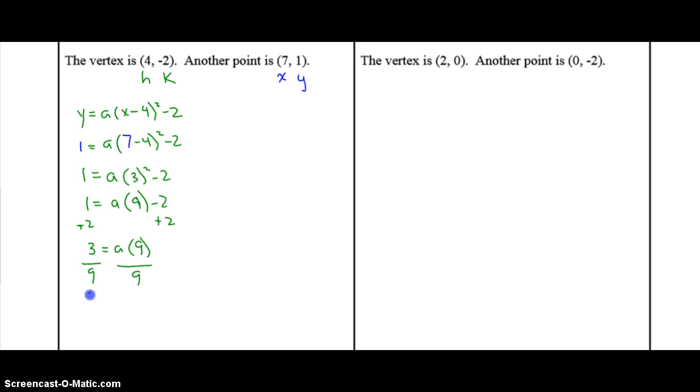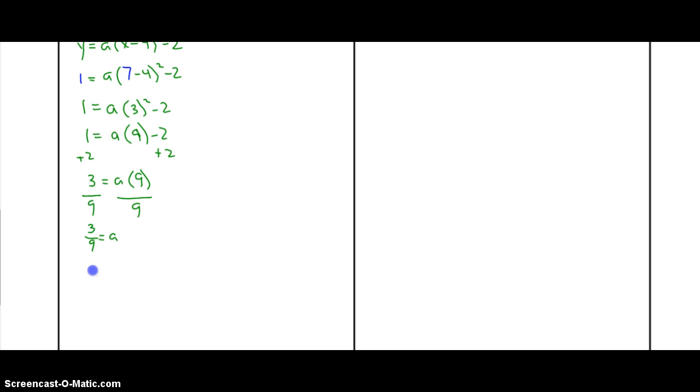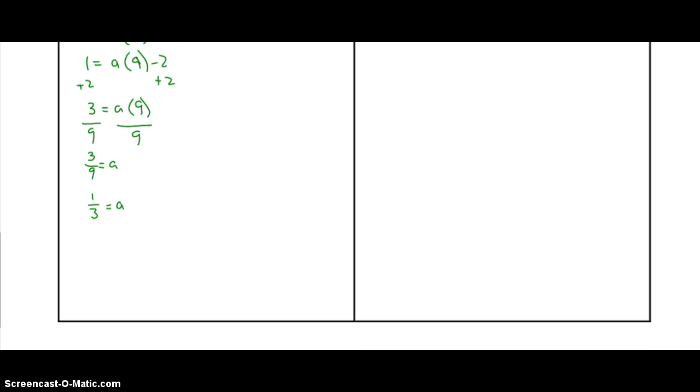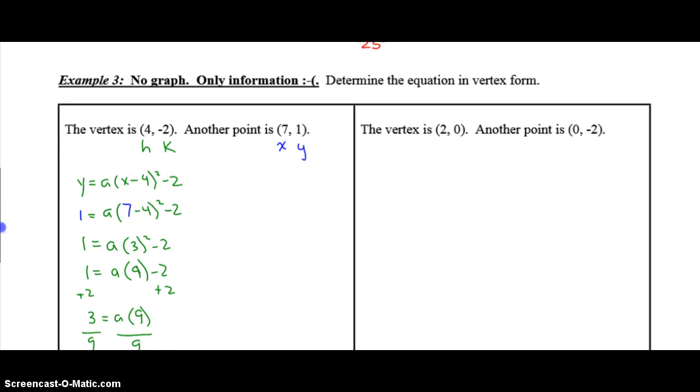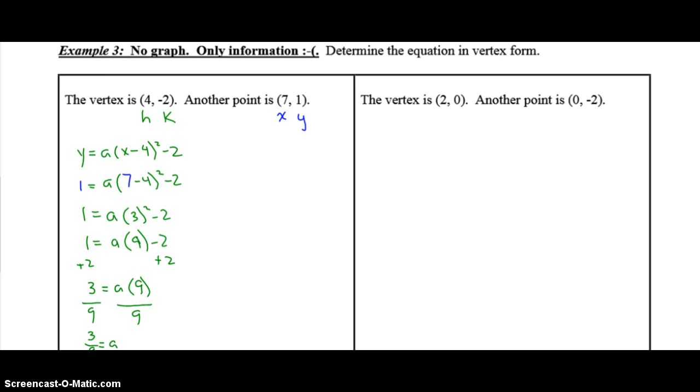So a is 3 over 9. Which is 1 third and lowest terms. So your equation is 1 third x minus 4 plus 2. So what you're going to do is you are going to try this example. The exact same way as this. Pause the video. Try the example. Play the video to check your answer. So pause now please.